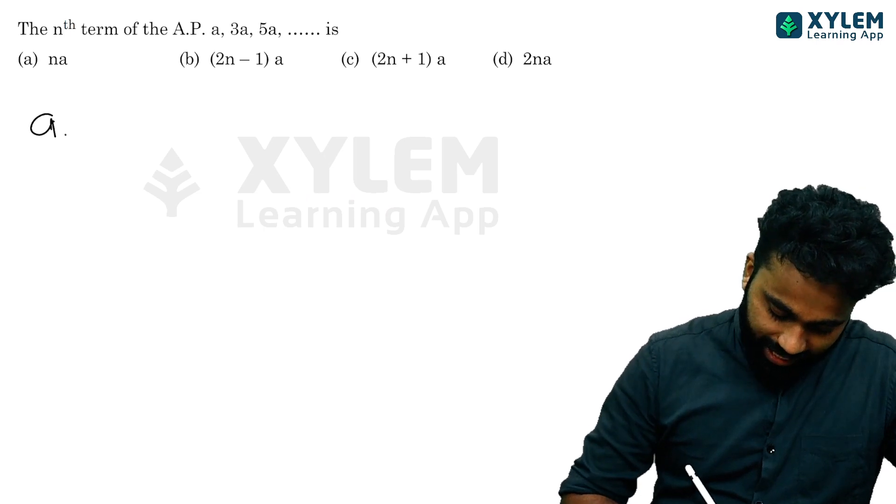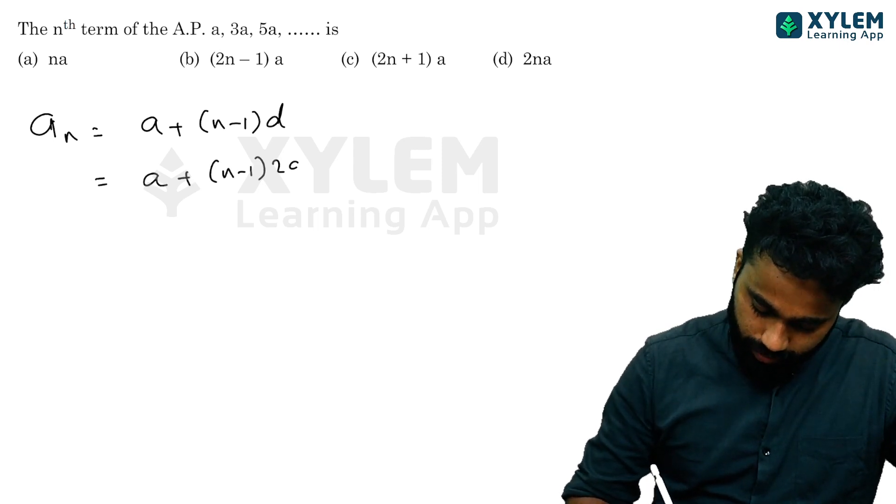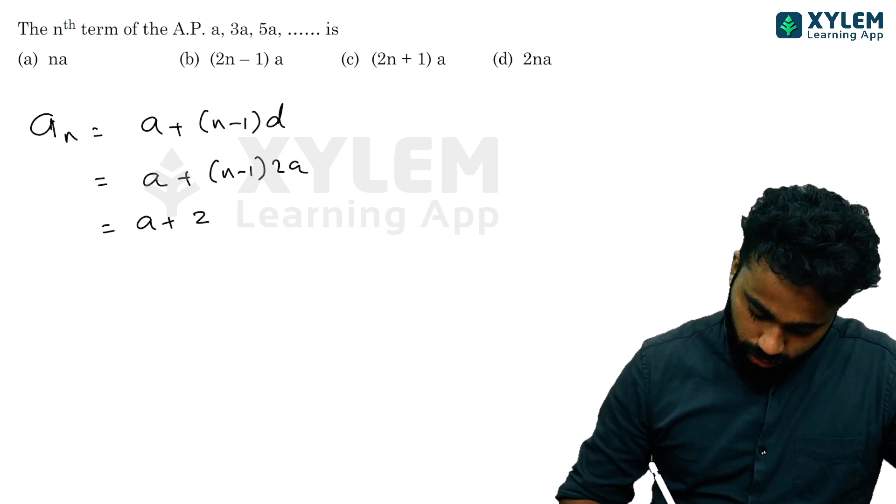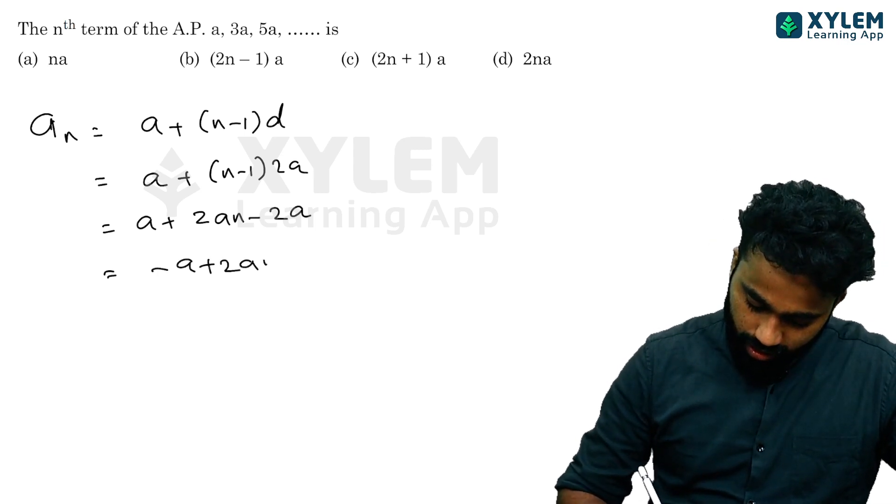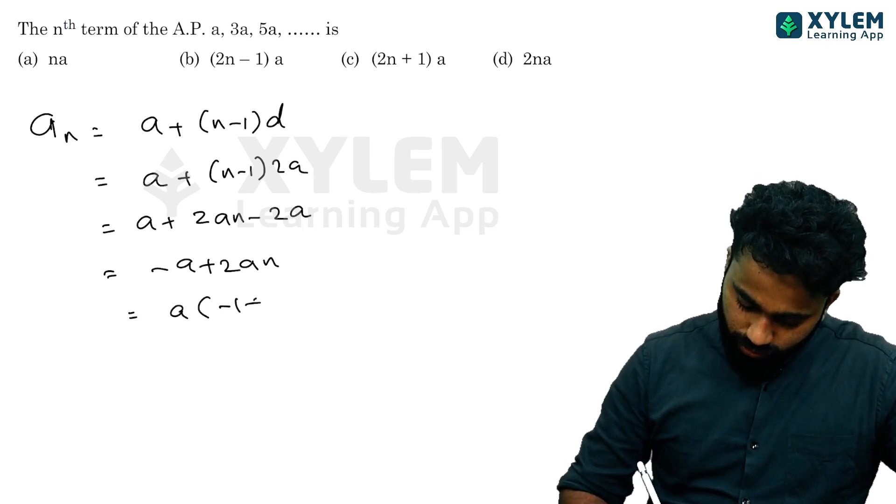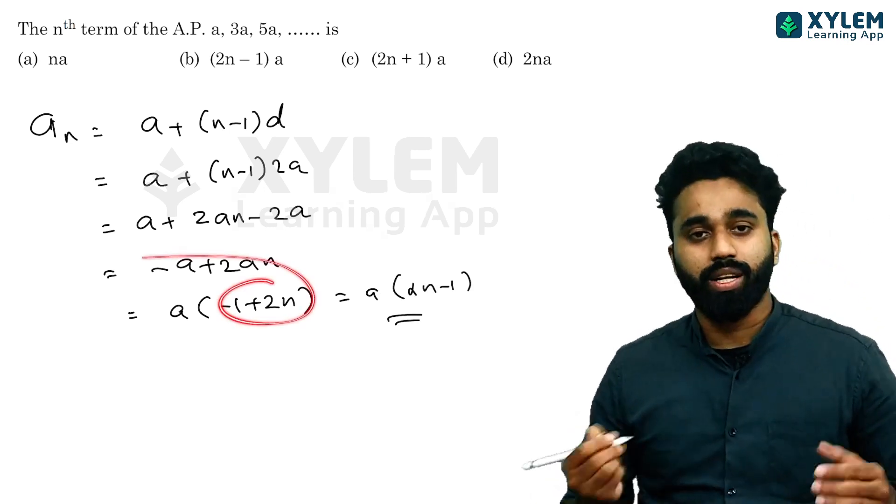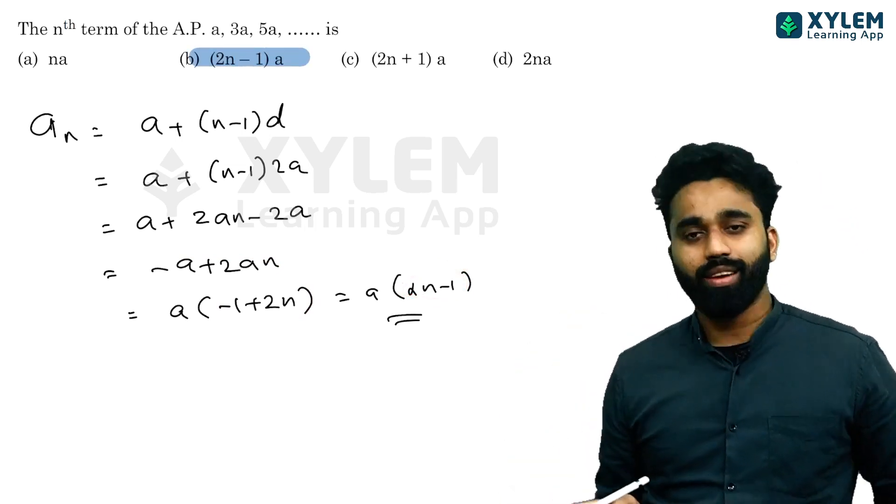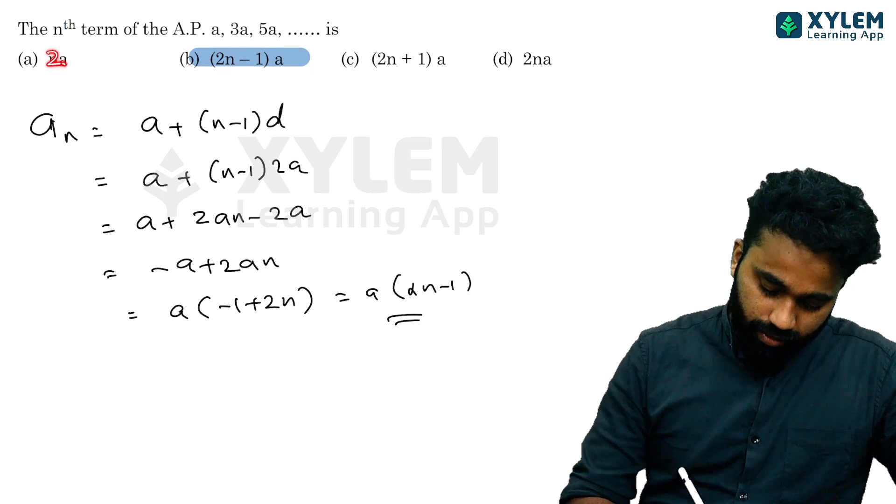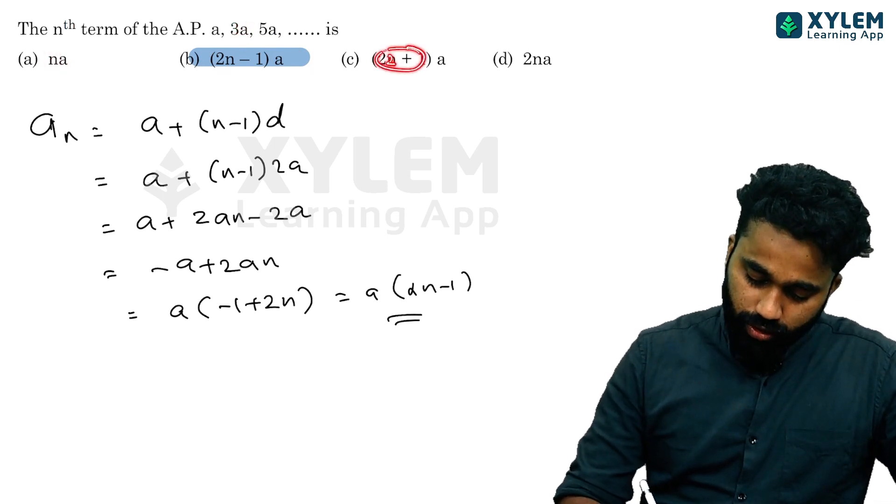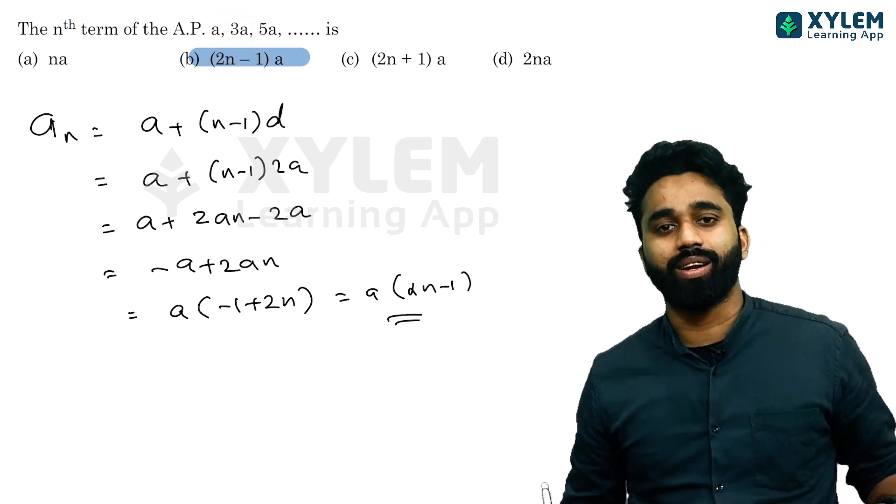For the nth term, aₙ equals a plus (n minus 1) times d. Here d is 2a, so aₙ equals a plus (n minus 1) times 2a, which equals a plus 2an minus 2a. Simplifying: a minus 2a equals minus a plus 2an. Factoring out a gives a(2n minus 1). This is the final answer.